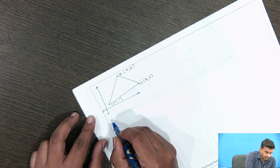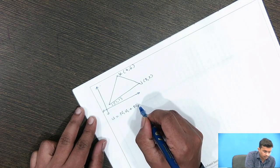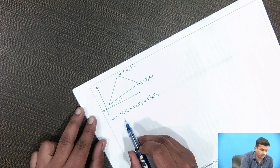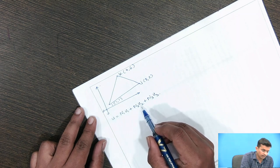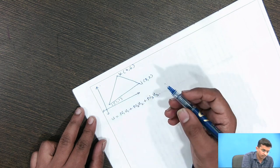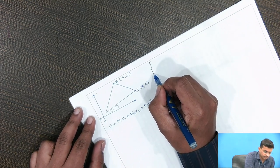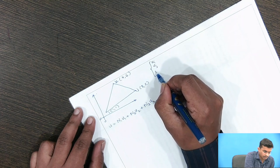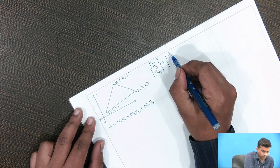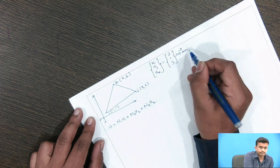We know that u equals n1·u1 plus n2·u2 plus n3·u3. We need to first calculate the values of n1, n2, and n3. Here u1, u2, u3 are nothing but ui, uj, and uk. The values are: ui = 2, uj = 1, uk = 3, all times 10⁻³ mm.